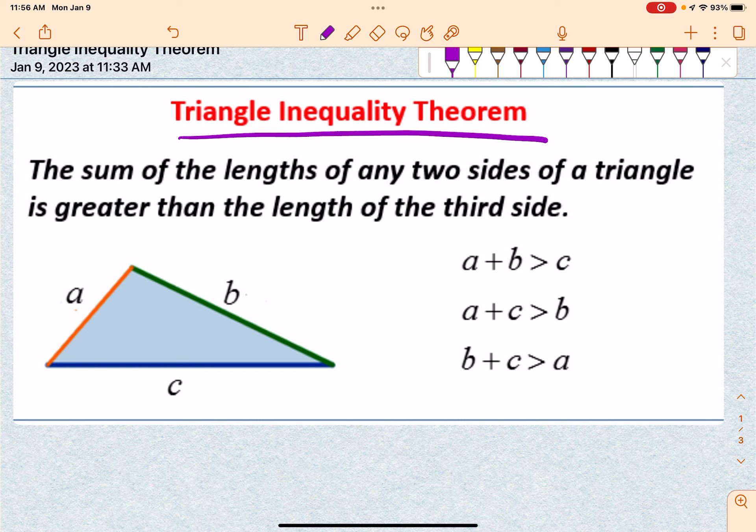Whenever you're looking at the sides of a triangle, they may look somewhat like this. They have just labeled three sides A, B, and C. And really, they're saying if I add any two sides together, it's going to be greater than the third side.